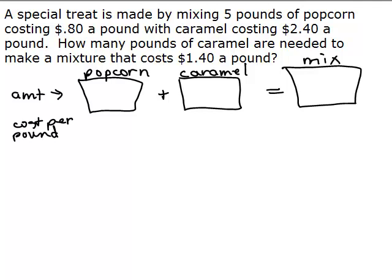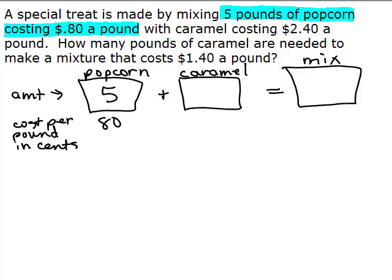All right, so for the popcorn, do we know how many pounds of popcorn we have? Well, I see that right here we've got 5 pounds of popcorn and it costs 80 cents a pound. So that tells me a lot of information. I know I have 5 pounds and I know it's 80 cents a pound, and I'm doing it in cents so I'm just going to put 80. So we really know exactly how much we're paying for the popcorn, right? 5 times 80 cents, it's going to be $4 or 400 cents.